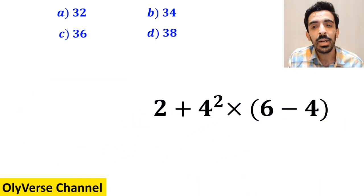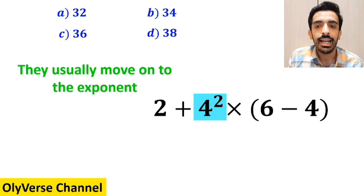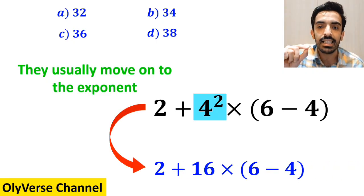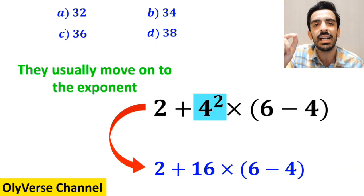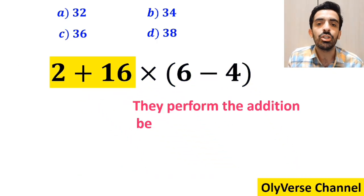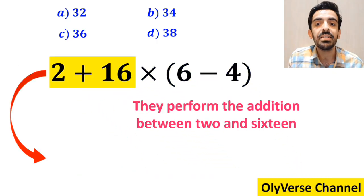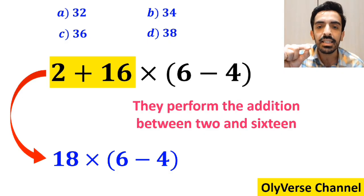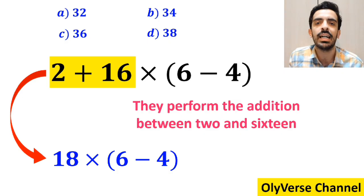And the next step, they usually move on to the exponent, and replace this expression with 2 plus 16 times 6 minus 4 inside the parenthesis. Then, they perform the addition between 2 and 16, and simplify this expression to 18 times 6 minus 4 inside the parenthesis.